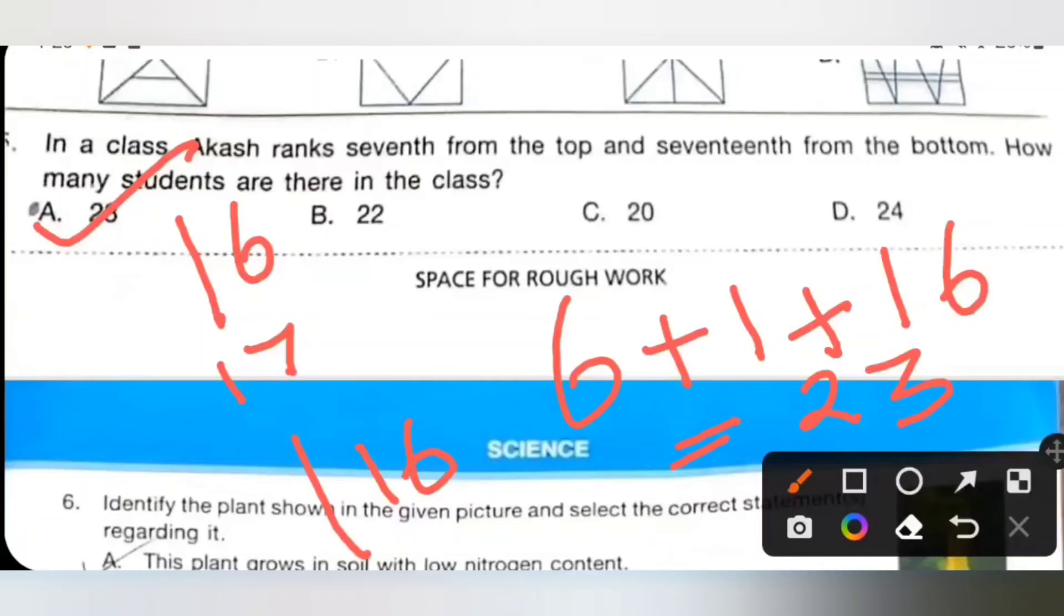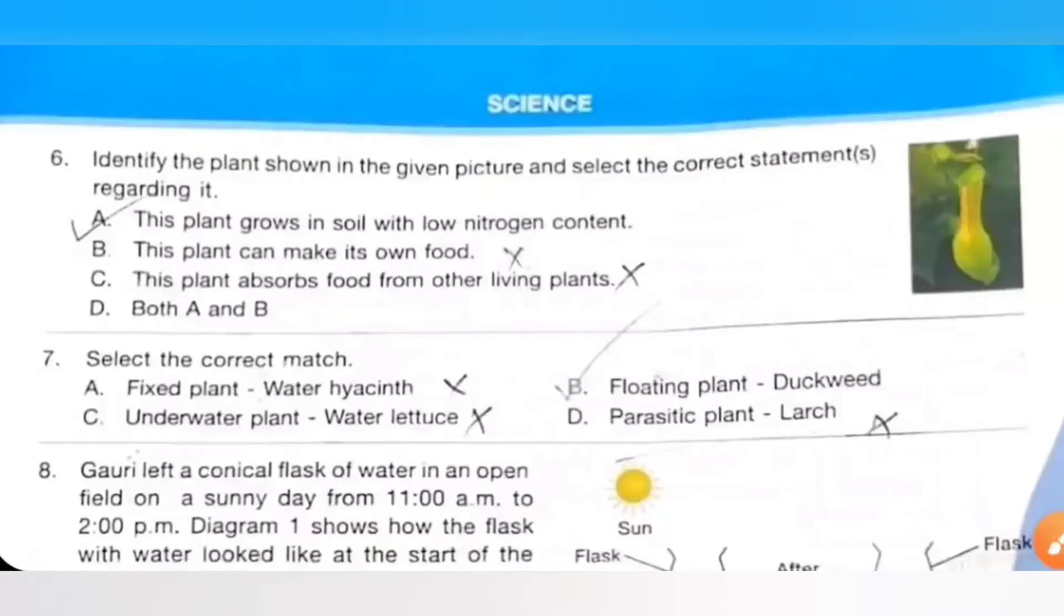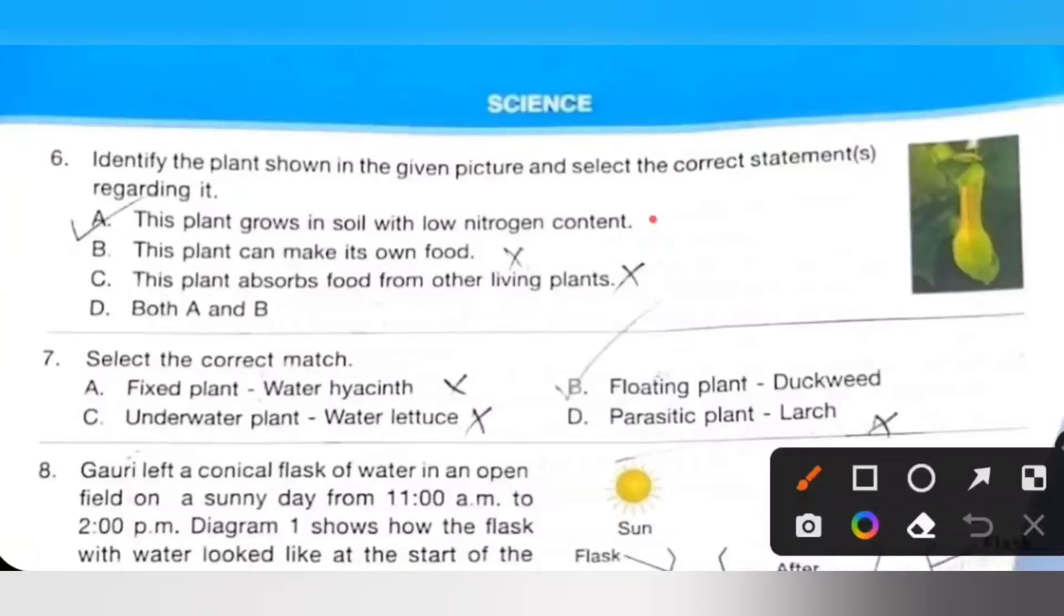Section is science. Sixth one: Identify the plant shown in the given picture and select the correct statement regarding it. The given plant is pitcher plant. Option A: This plant grows in soil with low nitrogen content, it is correct statement. B: This plant can make its own food, correct statement. C: This plant absorbs food from other living plants, incorrect. D: Both A and B. So option D, both A and B.